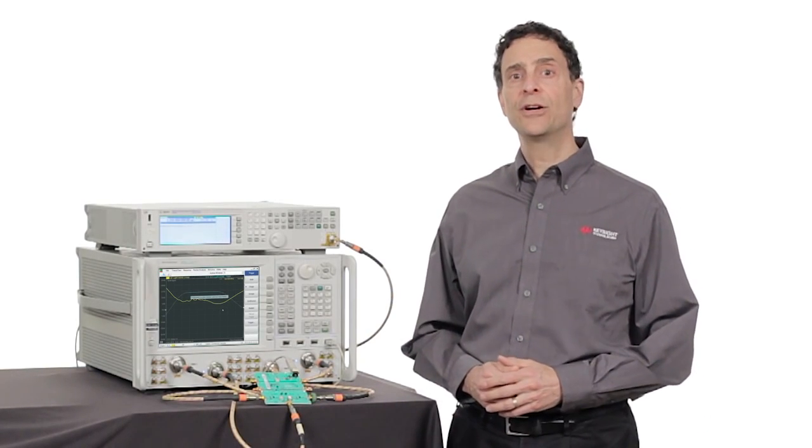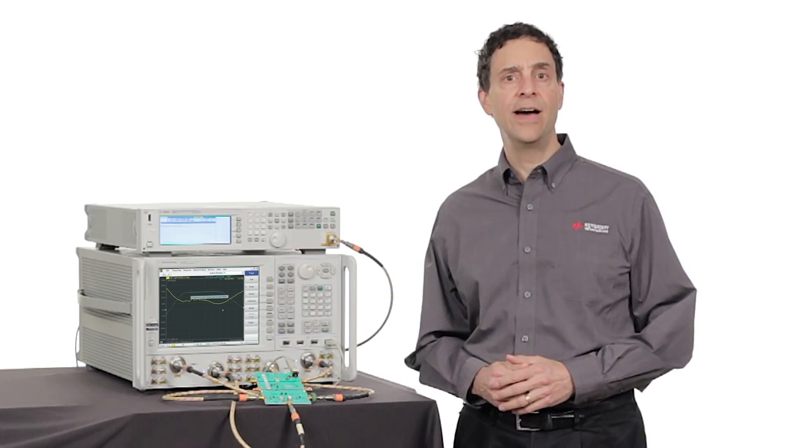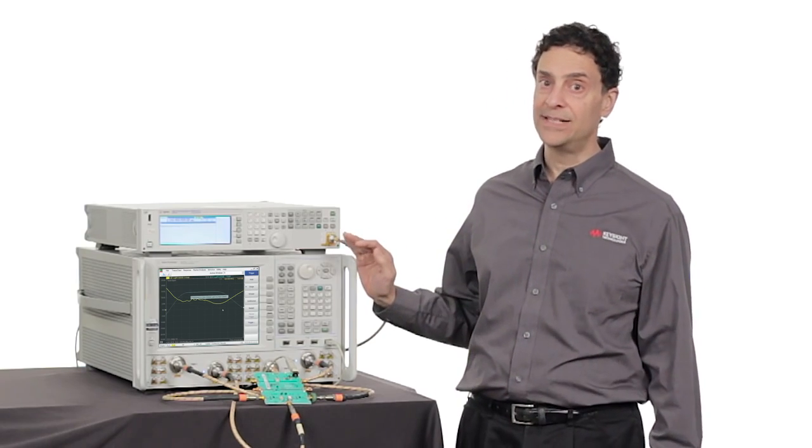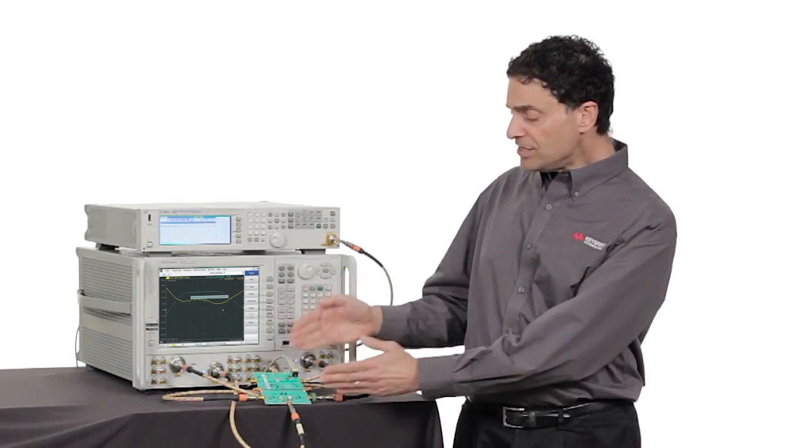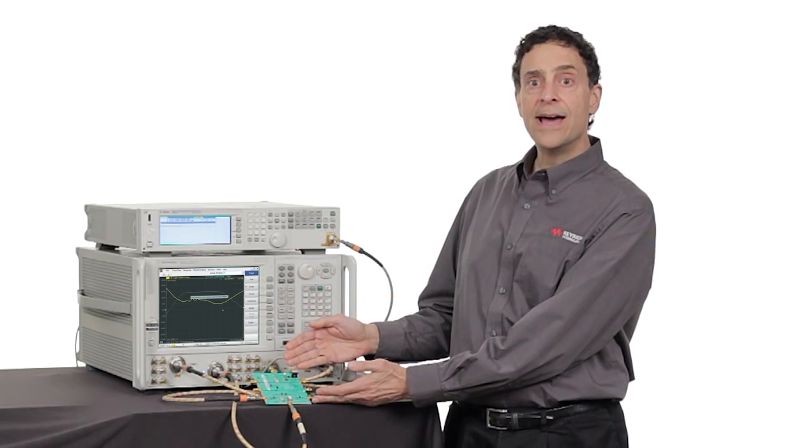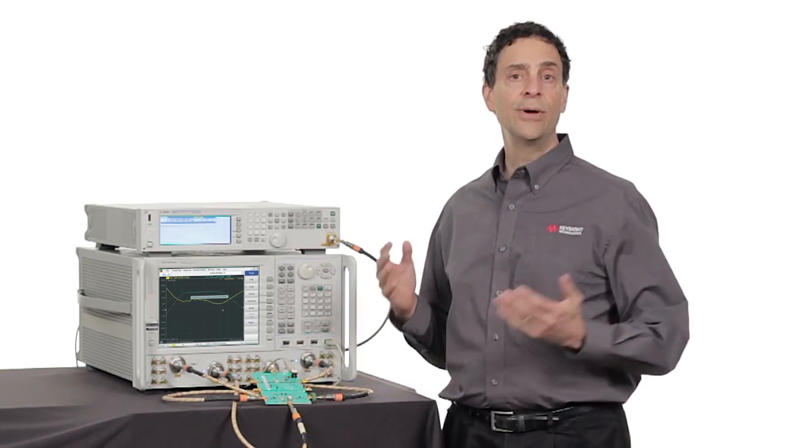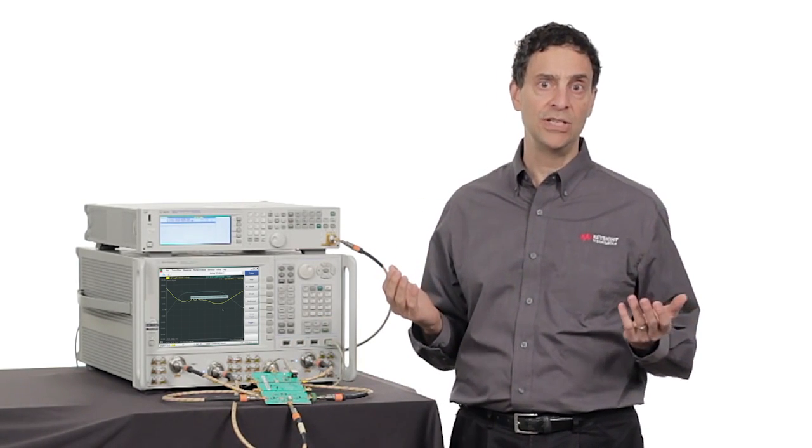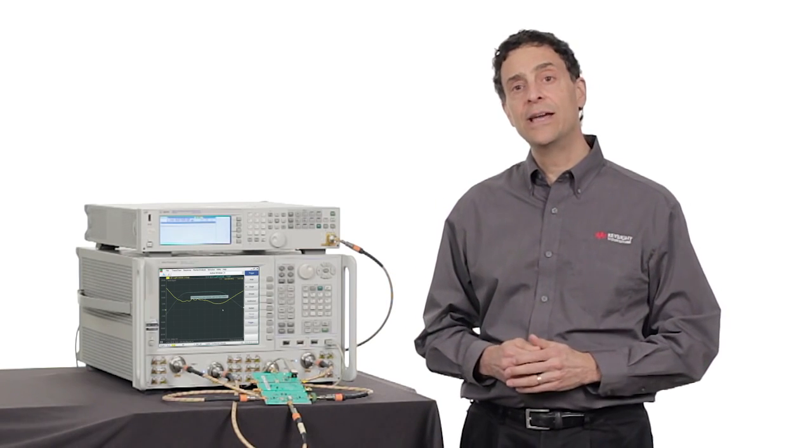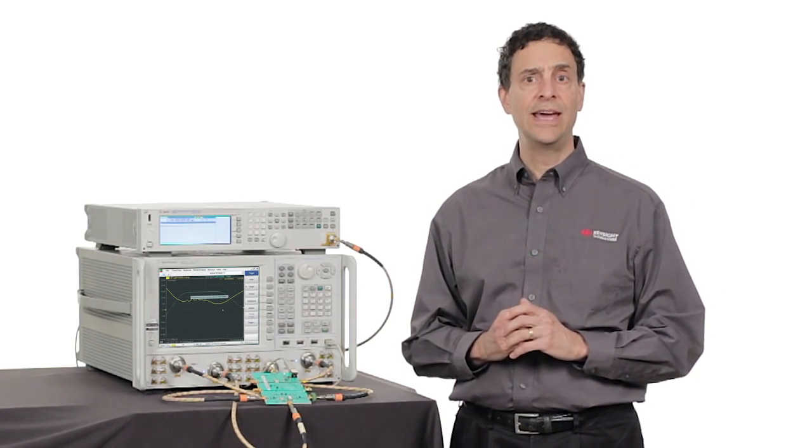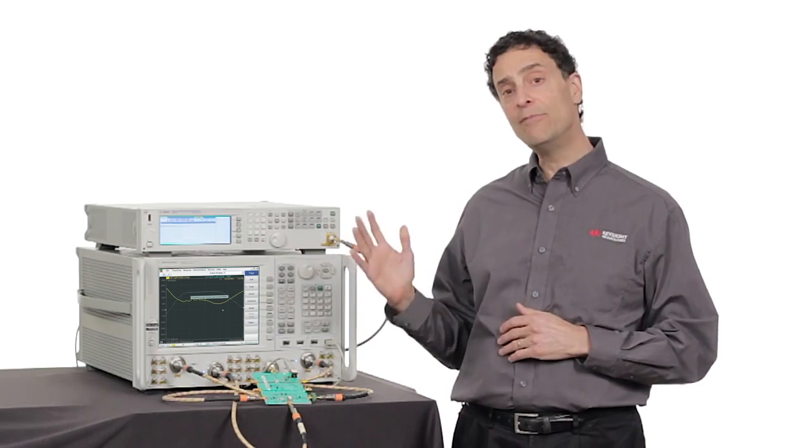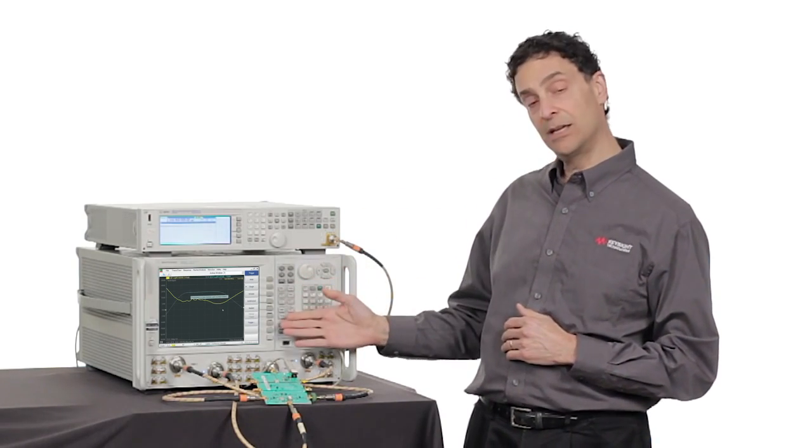This condition often occurs when measuring high-gain devices with an incorrect test setup. However, this frequency converter only has 8 dB of gain, so it can't be overdriving the noise receiver. A spectrum analyzer would be very useful in this case to determine if an out-of-band signal was causing the overload.